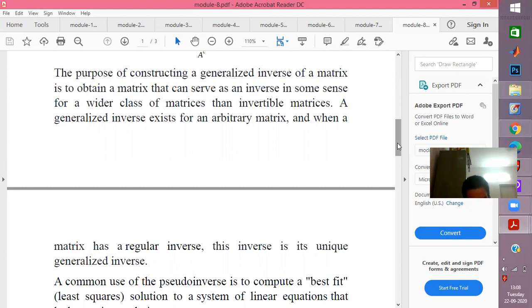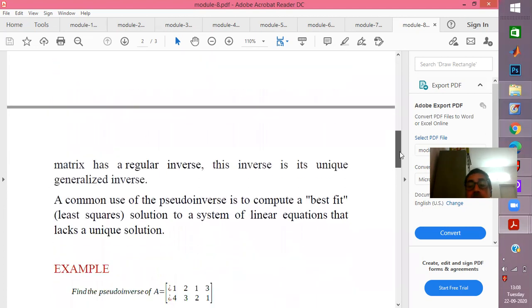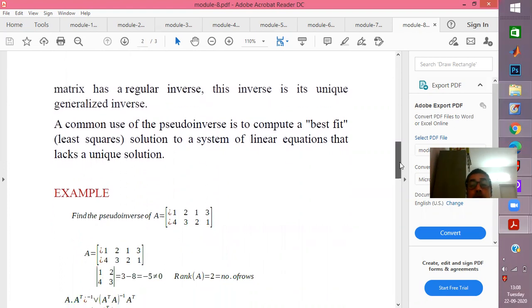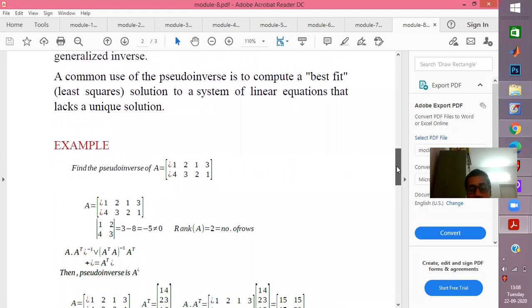In that case, this generalized inverse or the pseudo inverse can be used to give us the so-called solution of best approximation in the least square sense. The least square solution of a system of equations heavily depends upon the generalized inverse.